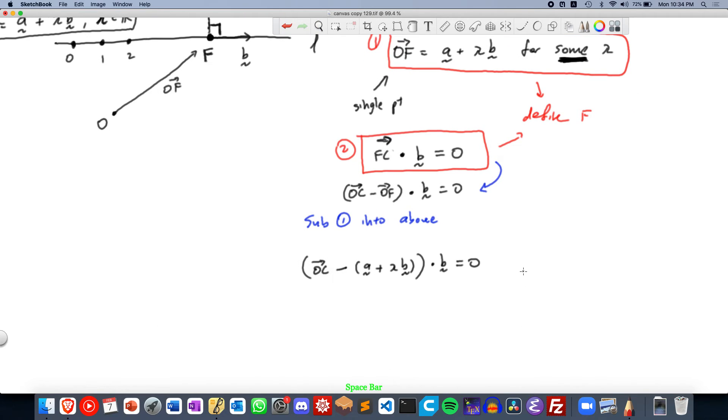So these are all quantities that we are given in the question. So in this case, we would know the question will give us the point C, right? Because they want us to find the projection of C onto the line. They'll give us the line L, which means that they give us A and B. And so all we have to do is solve for lambda.